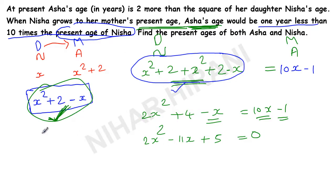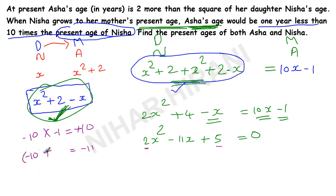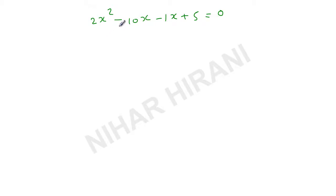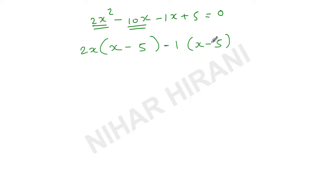Now I need to split the middle term. I want two numbers that multiply to 2 times 5, which is 10, and add to minus 11. That's minus 10 and minus 1. So: 2x squared minus 10x minus 1x plus 5 equals 0. Taking 2x common from the first two terms: 2x bracket x minus 5, minus 1 bracket x minus 5, equals 0. Therefore 2x minus 1 equals 0 or x minus 5 equals 0.